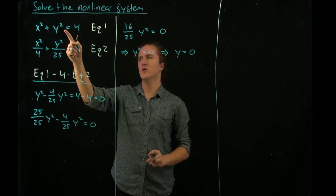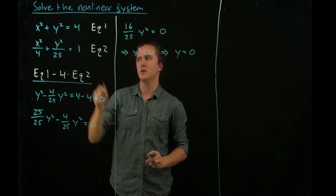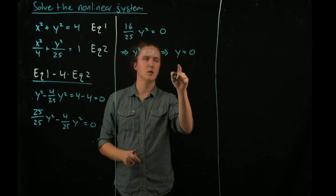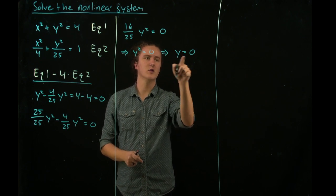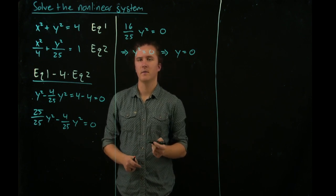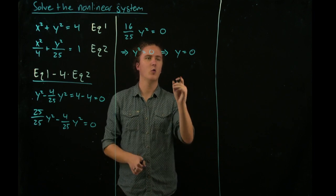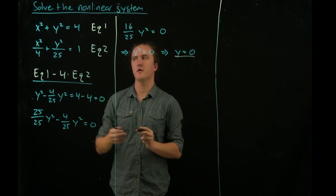So the only possible solution between these two graphs is the point where they intersect with the line y equals 0. But we only know y. We also need to solve for x.